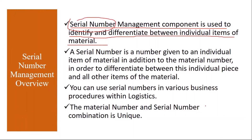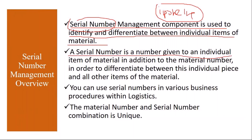For example, let's say you have iPhone 14. There will be a lot of iPhone 14s. So each iPhone 14 will have its unique serial number. If the same iPhone model is used by many people, how will you identify each one and differentiate? You will assign a unique serial number to each iPhone separately. A serial number is a number given to an individual item of a material in addition to the material number, in order to differentiate between that individual piece and all other items of the material.